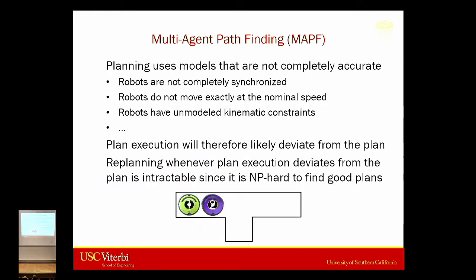One of the key issues is that planning has to use models, and these models will never be completely accurate. In our multi-agent pathfinding simplifications, we assume robots are completely synchronized, moving in lockstep at exactly nominal speeds. We don't model kinematic constraints, we don't worry about velocities, and so on. In practice, of course, these assumptions are not quite justified, so plan execution will likely deviate from the plan.